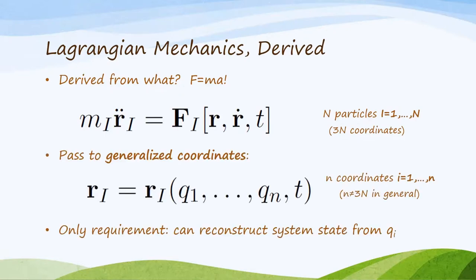Now, Lagrangian Mechanics emerges when you start thinking about other ways you might specify the system. Maybe instead of giving all of the Cartesian positions, you want to give the spherical coordinate positions. Or maybe you want to give some other kind of coordinate, like the angle between two bars in your system. In general, any set of numbers, q1 through q little n, from which you can reconstruct the original Cartesian positions, i.e. the state of the system, is called a generalized coordinate system.